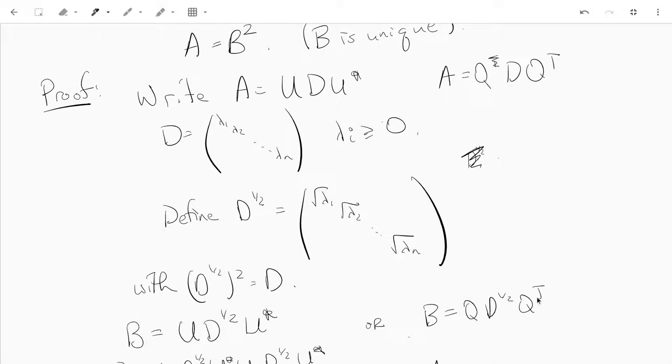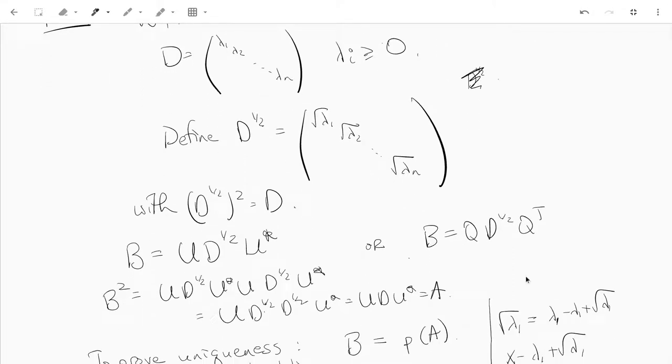Now we compute B squared. B squared is UD^(1/2)U* times UD^(1/2)U*. U*U is the identity, so we have UD^(1/2)D^(1/2)U*. D^(1/2) squared is just D, so we have UDU*, which is A.